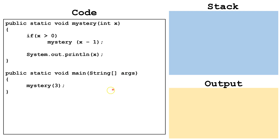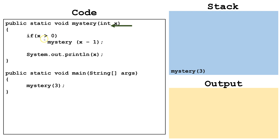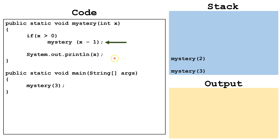Now let's write a main method and see what happens when we call mystery with the argument 3. We call mystery with the argument 3 and it puts that on the stack. The argument 3 goes into the parameter x. Then we check: is x greater than 0? 3 is greater than 0, so we make another call to the method. 3 minus 1 is 2, so we call mystery(2) and place it on the stack. This block of code at the end of the method won't be processed until we work our way back down the stack.